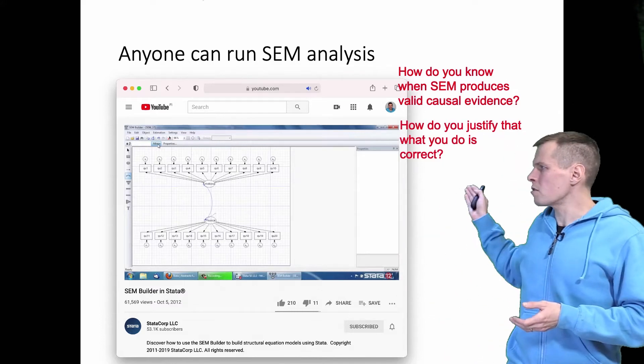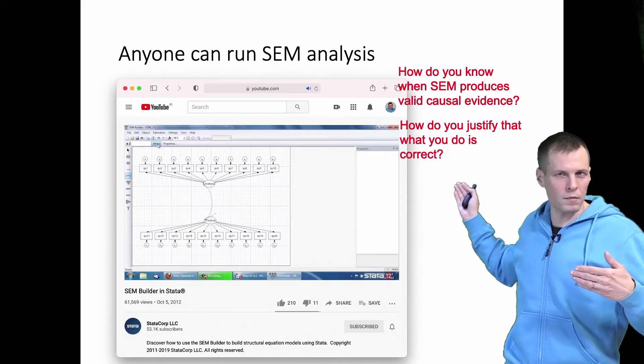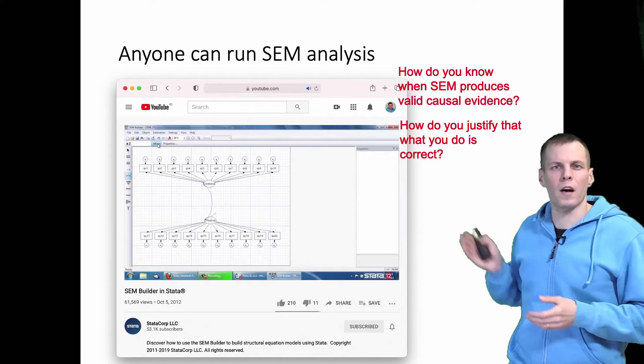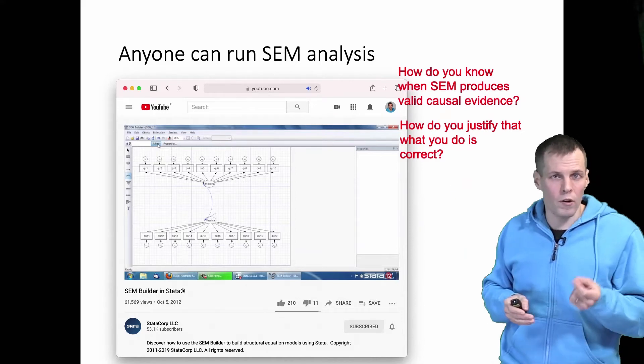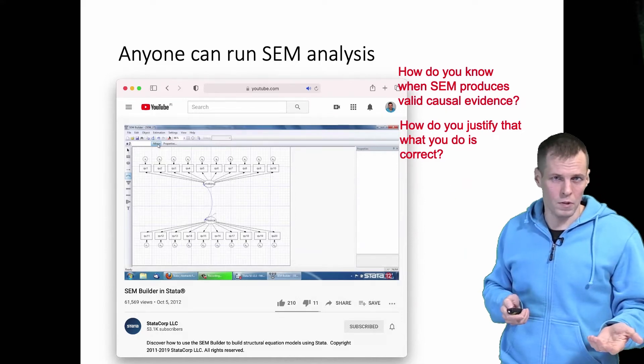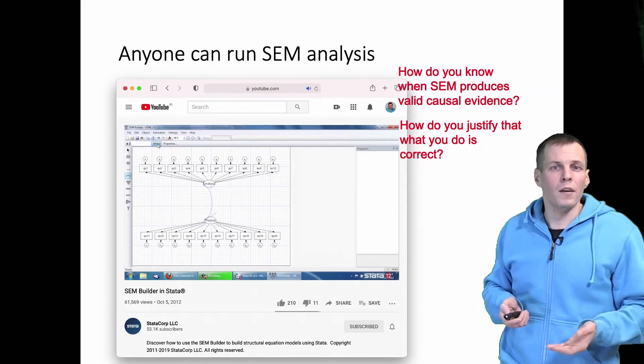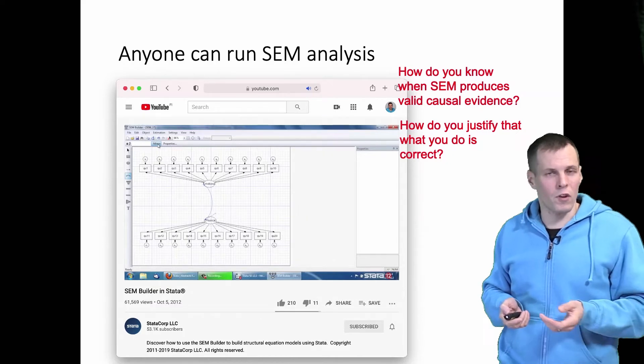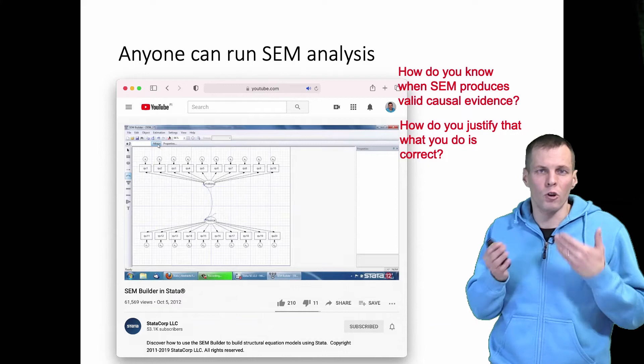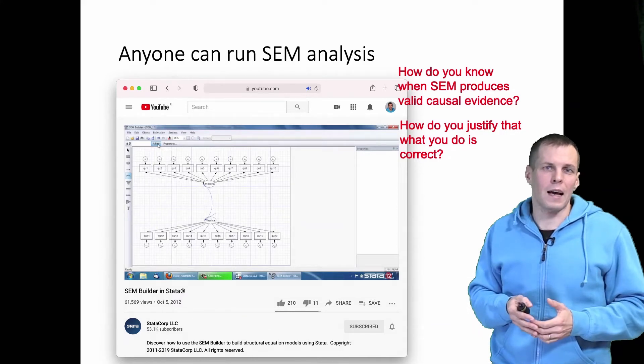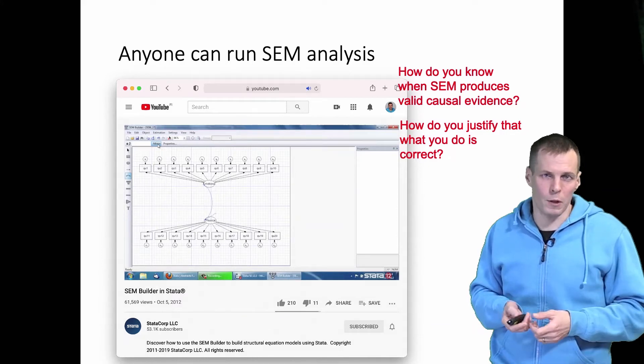And how do you justify that what you do is correct? How do you justify that you're actually using the correct estimation options? For example, most people simply go with software defaults. They don't even understand that alternatives would exist.